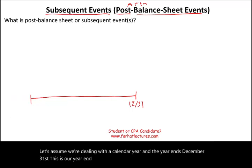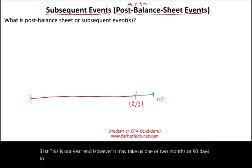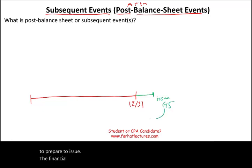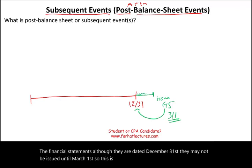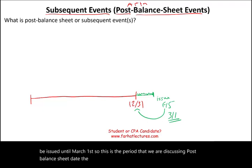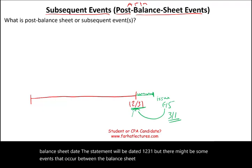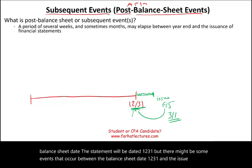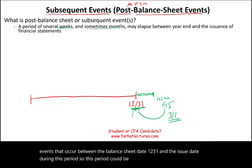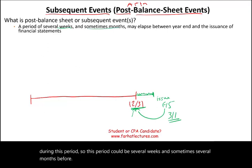It may take us one or two months, or 90 days, to prepare and issue the financial statements. Although they are dated December 31st, they may not be issued until March 1st. So this is the period we are discussing — the post balance sheet date. The statement will be dated 12/31, but there might be some events that occur between the balance sheet date and the issue date. This period could be several weeks, and sometimes several months, before the issuance of the financial statement.